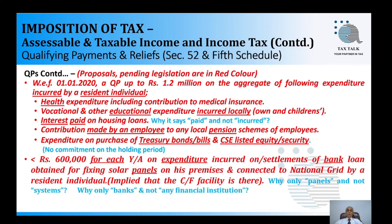There is also a qualifying payment of 600,000 rupees per year of assessment for expenditure on settlement of bank loans obtained for fixing solar panels on premises connected to the national grid, available only for resident individuals. However, there are weaknesses: the clause mentions panels only, whereas a solar system should cover the entire system including the inverter, wiring, and other components. Additionally, it covers only bank loans — a loan from another financial institution would not be covered, which should be addressed.